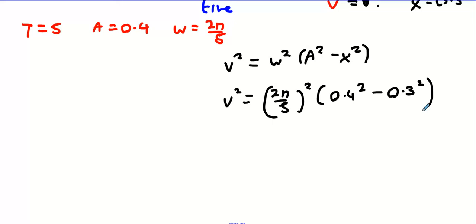0.07, and then we can square root that. Or just use the calculator: v² equals 0.110539.